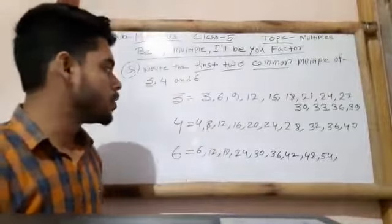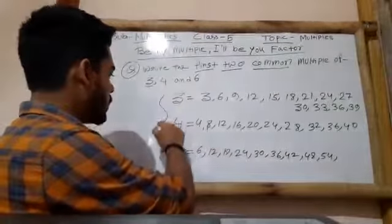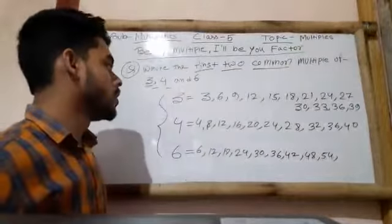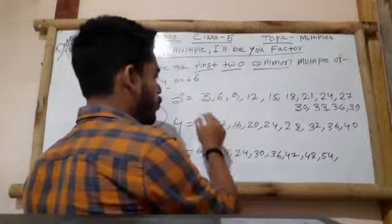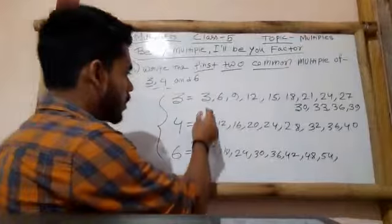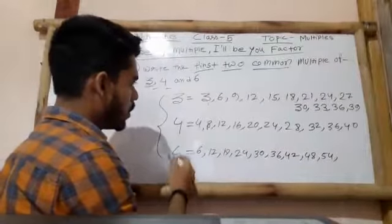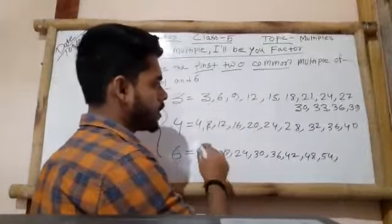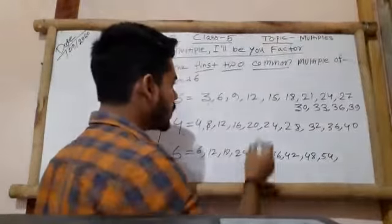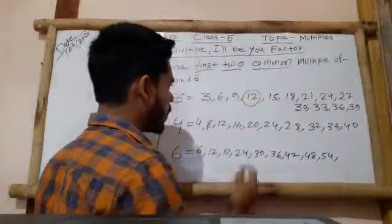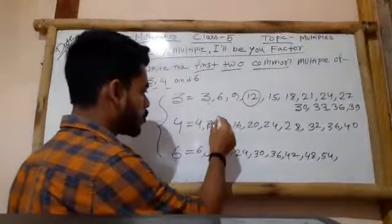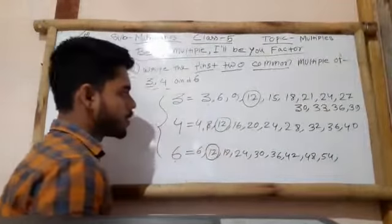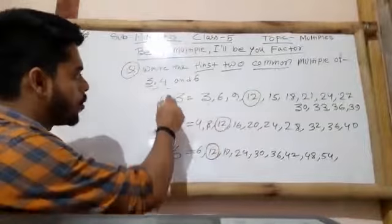So students, like that you have to determine the multiples of all three numbers to find the first two common multiples. If you consider the number 3, you can see 3 is not present in the multiples of 4, and it is also not present in the multiples of 6. So we have to determine which number is present in all of these multiples. For example, 12 — 12 is present in the multiples of 3, it is also present in the multiples of 4, and yes, it is also present in the multiples of 6. So this is the first common multiple among these three numbers.